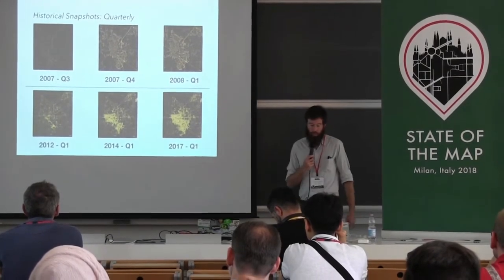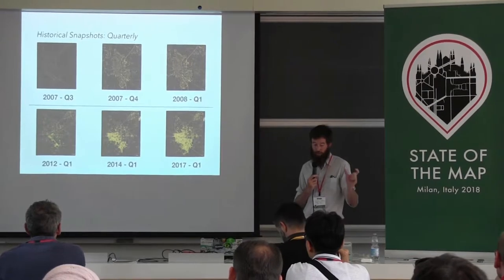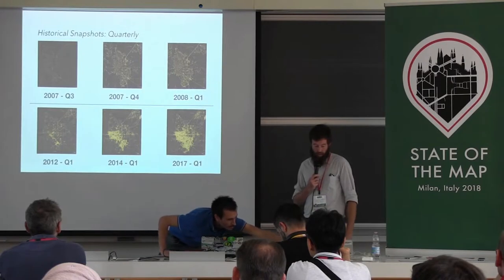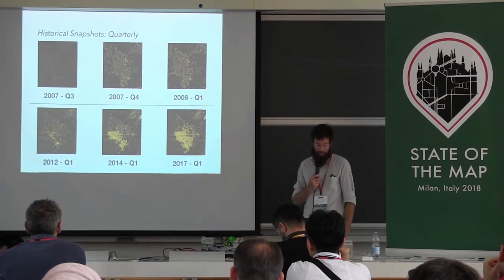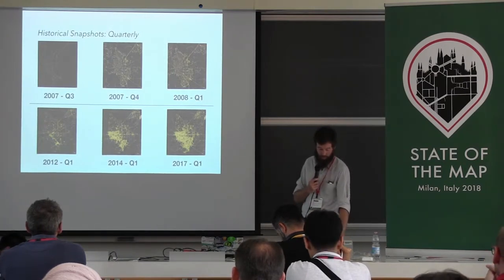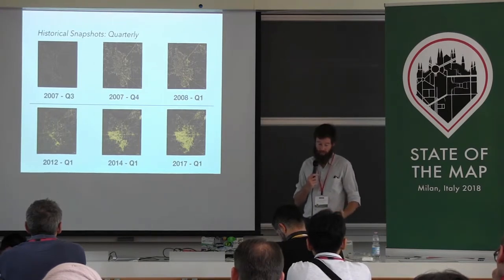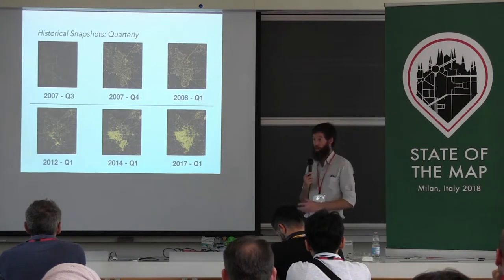Here's an example of those quarterly snapshots in my hometown, Boulder. The top row shows the growth of the road network over the second half of 2007 and the beginning of 2008 — this shows the importance of quarterly resolution to see actual growth. The bottom row shows the densification of the map as it filled in over the last six years. These quarterly snapshots give better resolution than annual snapshots, but primarily show growth over time, requiring time series analysis, and make it difficult to know who did what work when.